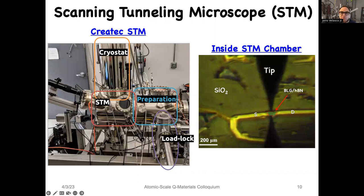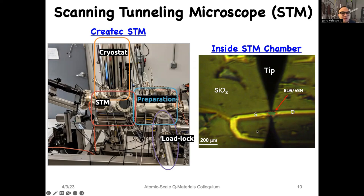Here is the instrument in my group: a Creotech scanning tunneling microscope that operates at a temperature of about 4.7 Kelvin in ultra-high vacuum. It has two chambers—a preparation chamber and an STM chamber—where we perform sample annealing and then transfer the sample into the STM. The instrument is housed in a soundproof room and possesses a 2 Tesla magnetic field oriented perpendicular to the sample. We use a long-lens telescope camera to visualize the tip-sample junction, with a bilayer graphene on hexagonal boron nitride, source and drain electrodes, surrounded by silicon dioxide.